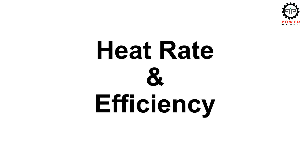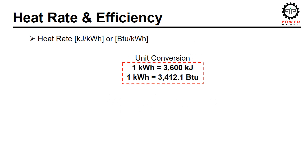Heat rate and efficiency: once we have the value of heat rate, it can easily be converted to efficiency numbers. The concept of heat rate and efficiency is simply a conversion of engineering units — this is a term that power plant colleagues usually misinterpret. Units of heat rate are normally in the form of kJ per kWh, or it can also be in BTU per kWh depending upon the system followed. For conversion of heat rate to efficiency, we need to remember the unit conversion of kWh to kJ or BTUs.